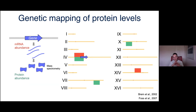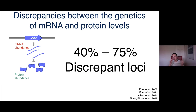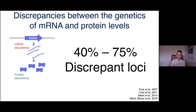A few studies have used mass spectrometry to measure protein abundance of the same genes and map those to the genome. When you do that, you get some loci that are the same but also considerable discrepancy — some mRNA loci have no effect on protein, and protein-specific loci appear. Depending on the study, there's quite a range; some find little discrepancy, others find a lot. The underlying issue: these comparisons are all based on data collected in independent projects at different times in different labs.